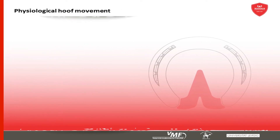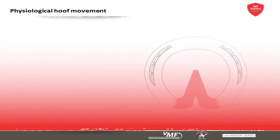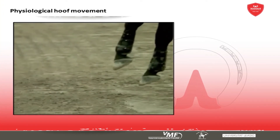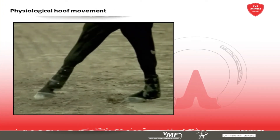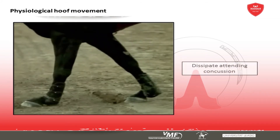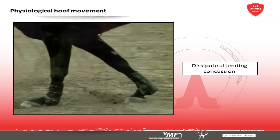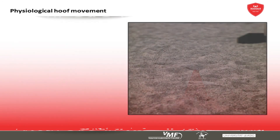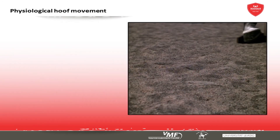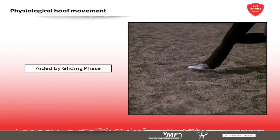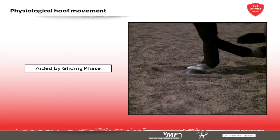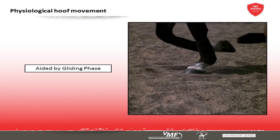First of all, the hoof capsule, as a flexible structure, will yield under the pressure on impact with the ground and mostly dissipate the attendant cushioning. This effect can be further aided with the gliding phase, in which the hoof can decelerate steadily instead of jerking to a sudden halt.